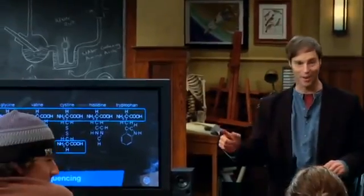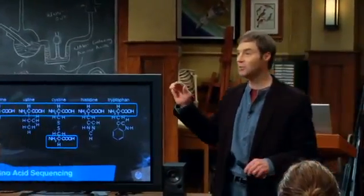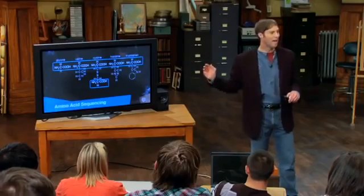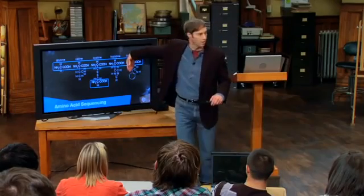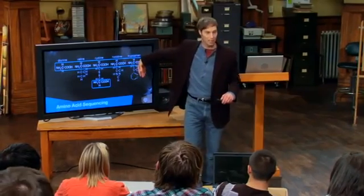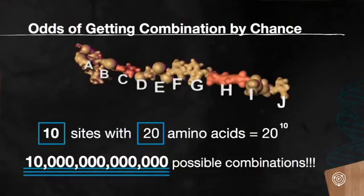Now 8,000 times 20 again — 160,000, and we're only to four. So there's a vast number of possibilities. You've got a 1 in 20 times 1 in 20 going out however many sites you have for amino acids. In a chain of amino acids that's just 10 sites long, you're already at 20 to the 10th possible combinations — that's 10 trillion possibilities.